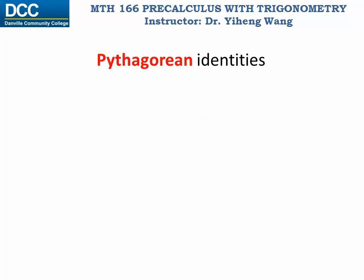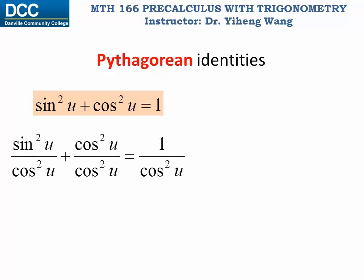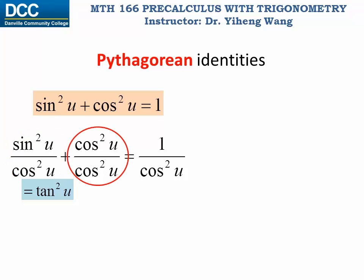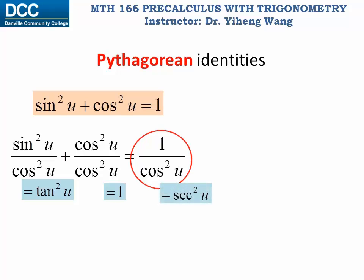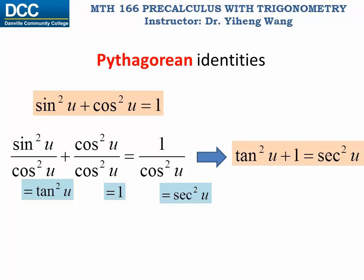We have already learned the most fundamental Pythagorean identity in trigonometry, which is for any given angle u, sine u squared plus cosine u squared always equals one. We will now derive two alternative forms. First, we divide both sides by cosine u squared. The first term, based on the quotient identity, equals tangent u squared. The second term equals one, and the last term, based on the reciprocal identity, equals secant u squared. Therefore this becomes tangent u squared plus one equals secant u squared.